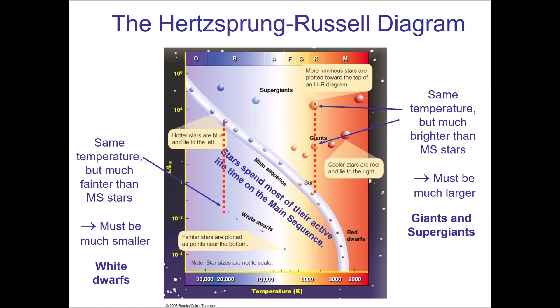It's extraordinary that we can see something the size of the Earth many light years away. The Hertzsprung-Russell Diagram makes these observations very apparent. Based on the placement of a star on the diagram, we can immediately see how its properties must be different from others. There are so many things we can learn about stars just based on their placement alone.